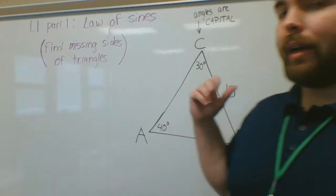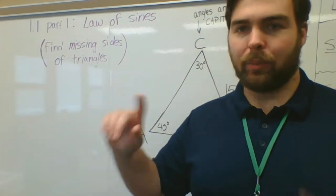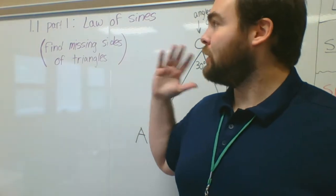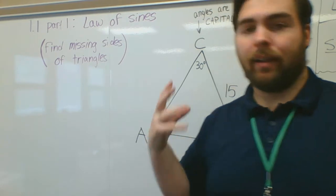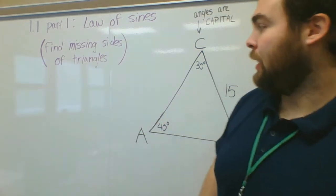This is going to be 1.1 Law of Sines, it's going to be part one. I'll split it up into two. This one, part one specifically, is about finding missing sides of triangles. We'll talk about that in a little bit.